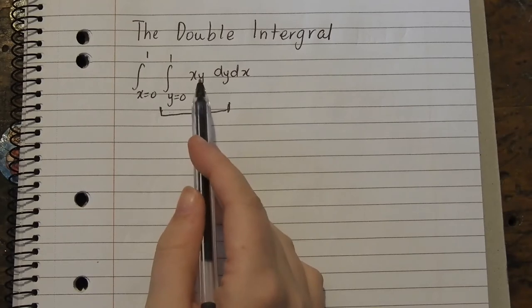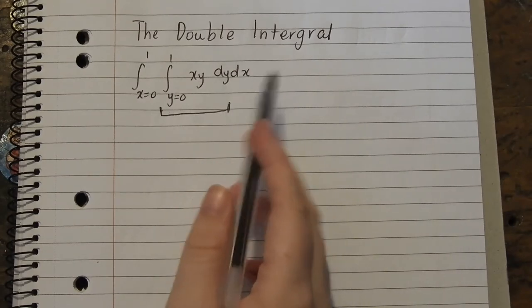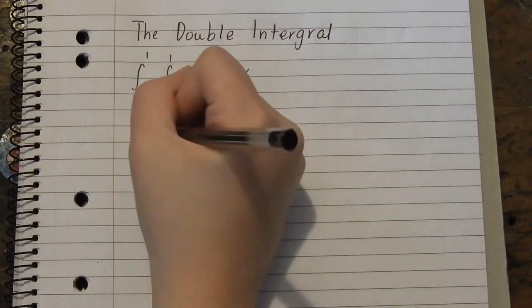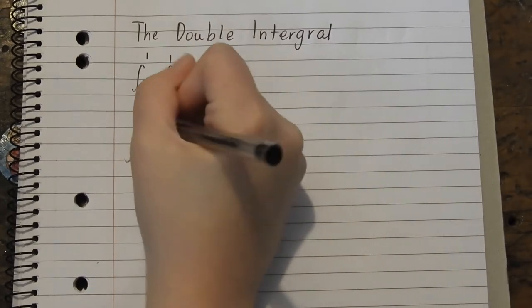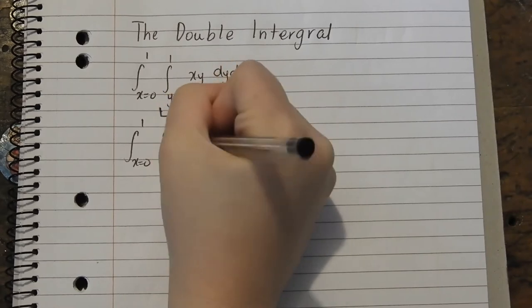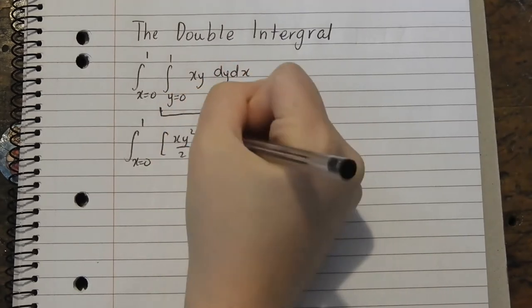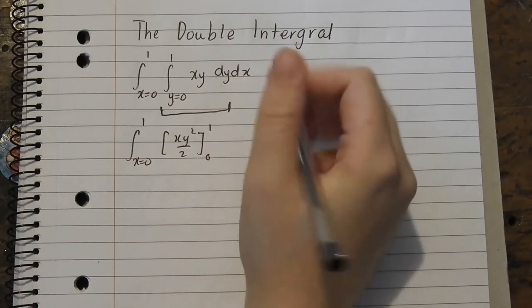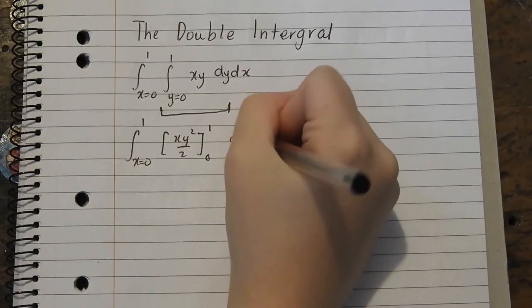So we only do the integrating rules and the integrating stuff on y. So we have integrating x goes from 0 to 1 of x, y squared on 2, and what were the limits of y? y goes from 0 to 1, but we still got the dx out here.